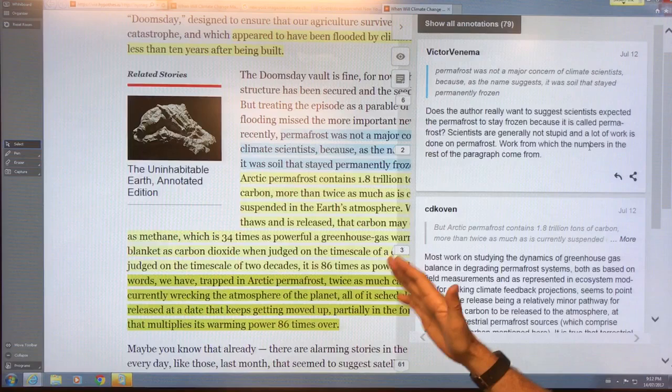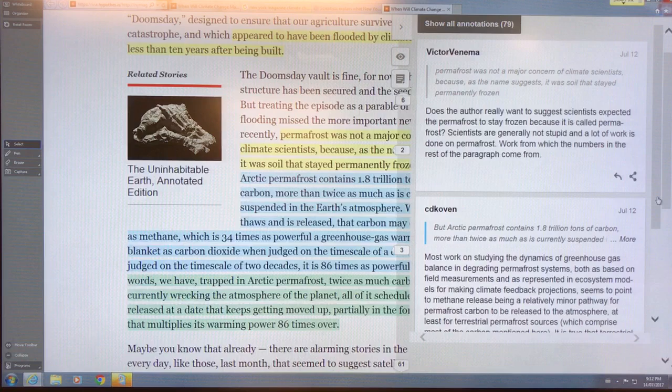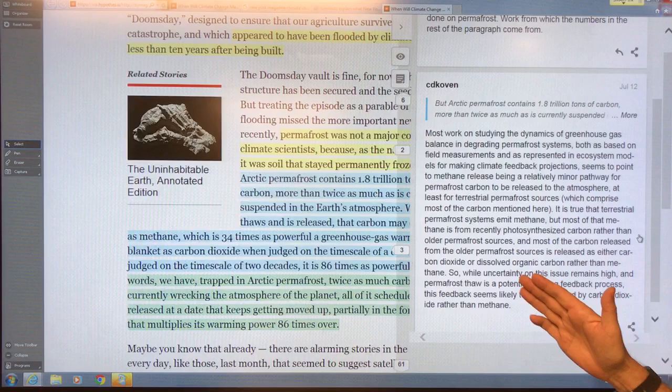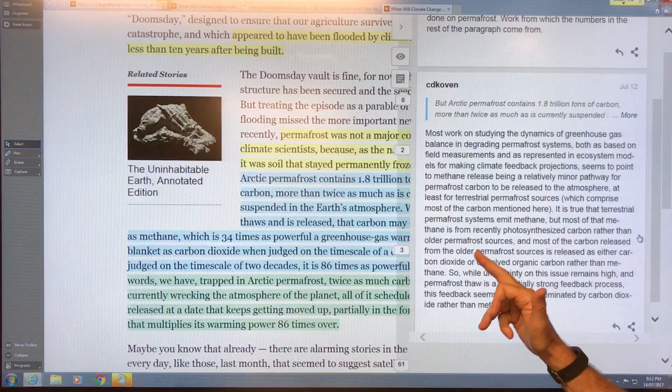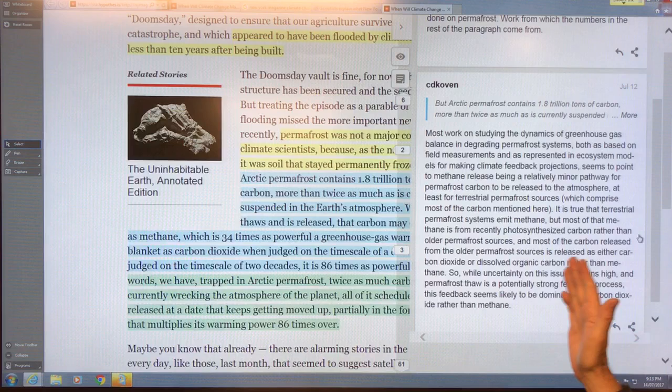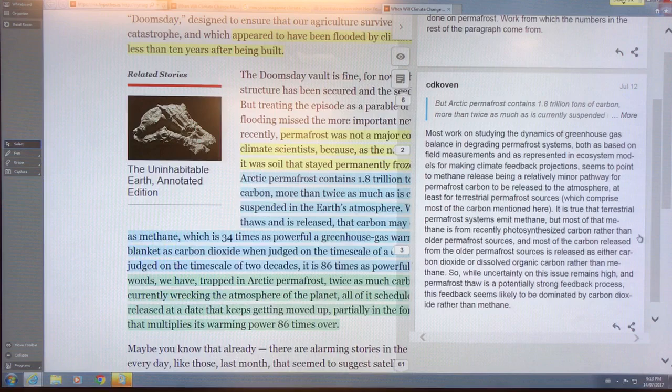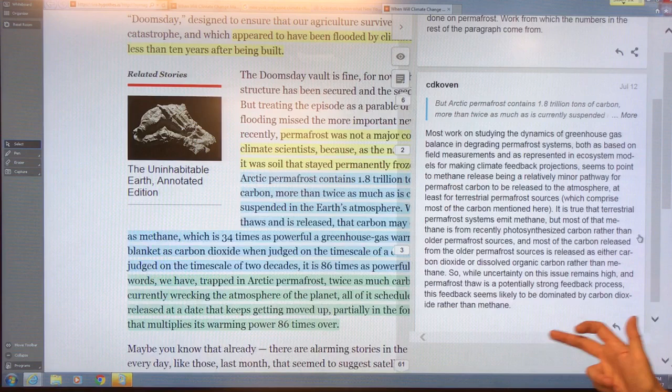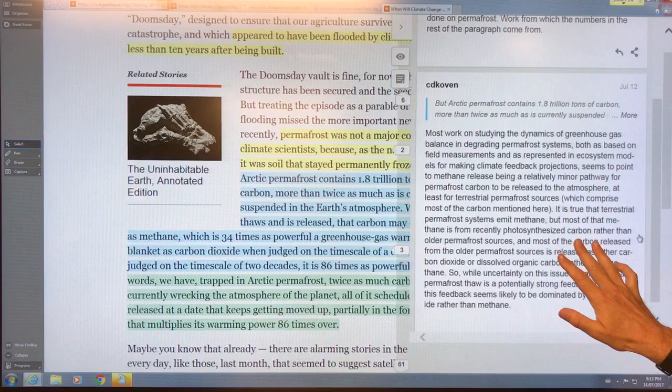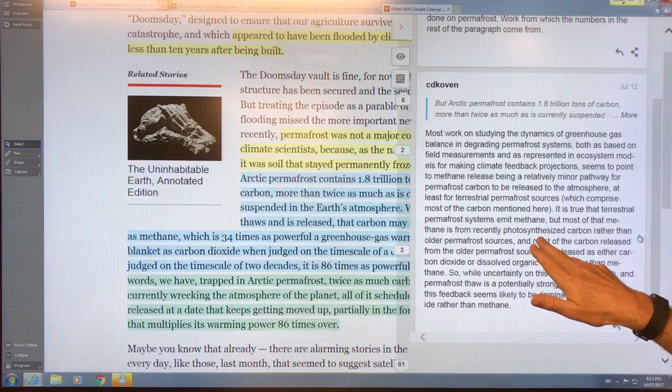This is talking about permafrost degradation and uncertainty. The statement that the feedback seems likely to be dominated by carbon dioxide rather than methane - the science doesn't back this up. To get carbon dioxide you have to have oxygen present, which happens near the surface. As soon as you go into the sediment, whether on the sea floor or on the surface, it's methane because it's anaerobic breakdown. I have no idea where this statement is coming from, it doesn't seem scientific to me at all.